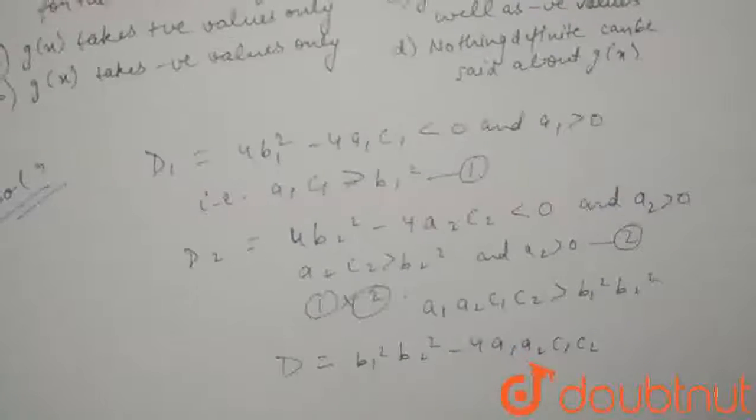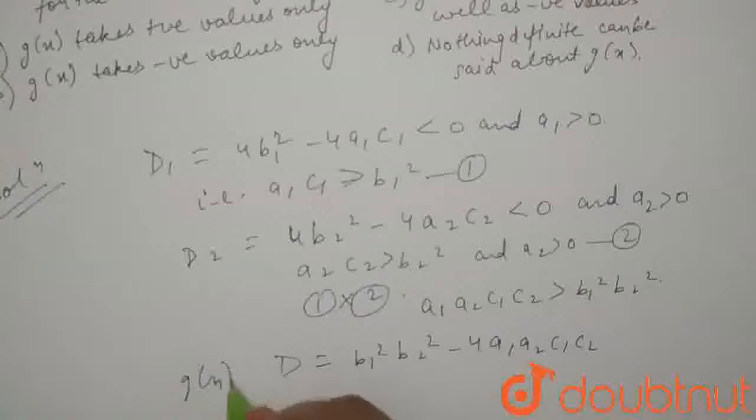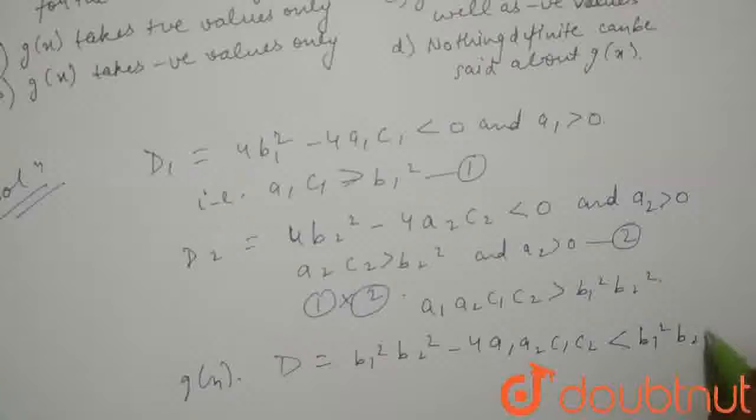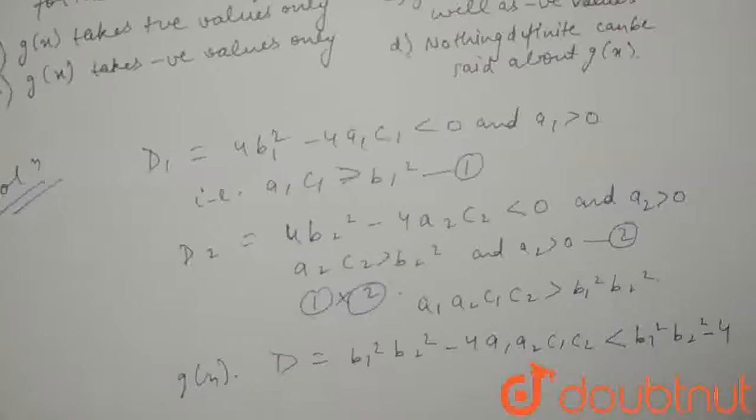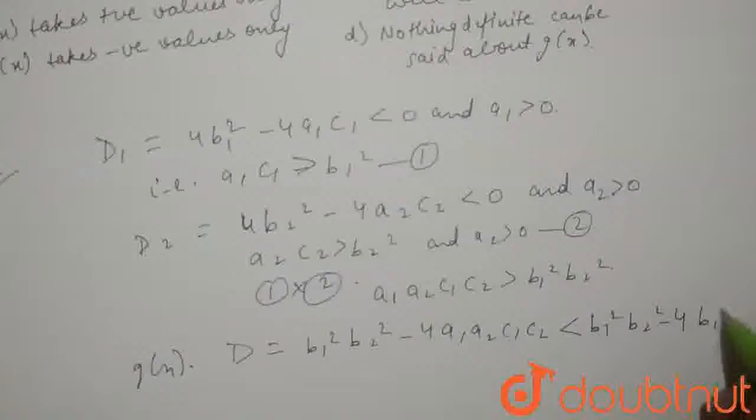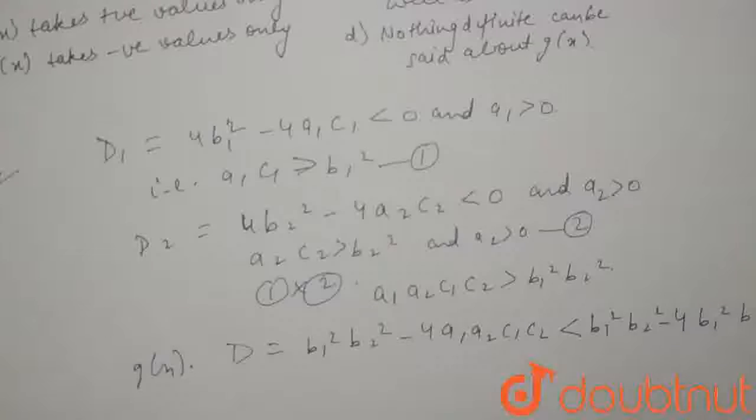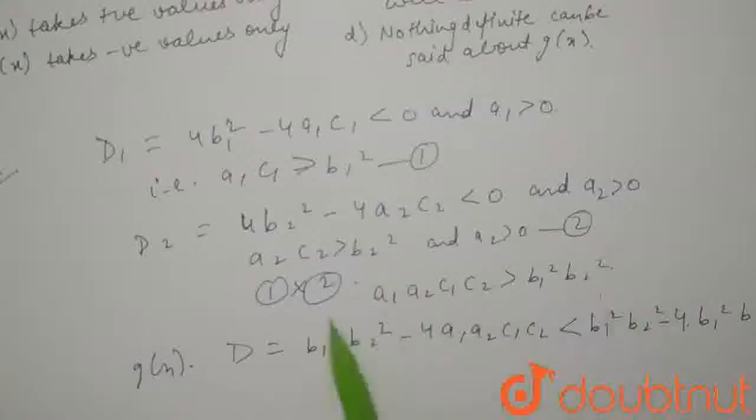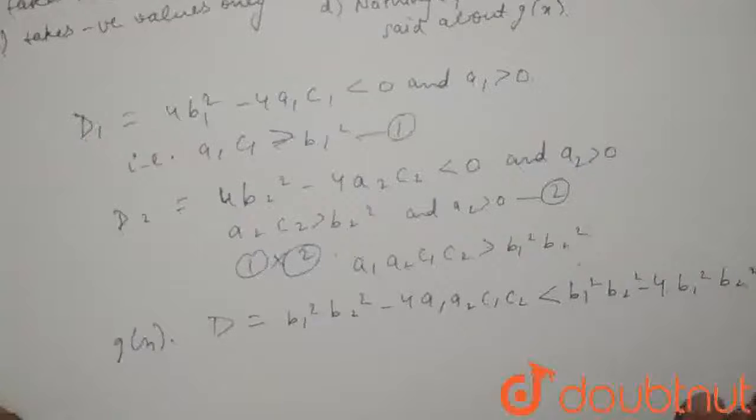This will be less than b₁²b₂² - 4b₁²b₂². When you simplify, terms cancel out and the sign of inequality changes. So, eventually we get the discriminant is less than -3b₁²b₂².